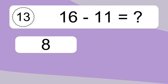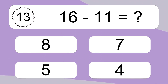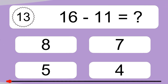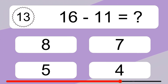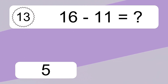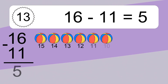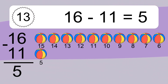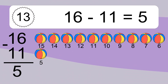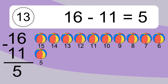16 minus 11 equals what? 16 minus 11 equals 5. Let's count it. 15, 14, 13, 12, 11, 10, 9, 8, 7.